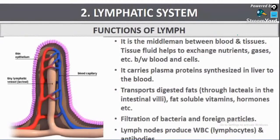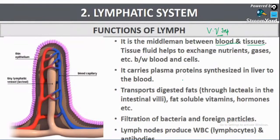Main functions of lymph — this is an important slide. First, lymph acts as the middleman between the blood and the tissue. Tissue fluid helps to exchange nutrients, gases, etc. between the blood and the cells.